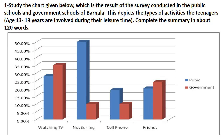Now here is an example. Study the chart given below, which is the result of a survey conducted in public schools and government schools of Brunala. It depicts the type of activities teenagers (aged 13 to 19 years) are involved in during their leisure time. Complete the summary in about 120 words. This is a double bar chart. On the x-axis the activities are given: watching TV, net surfing, cell phone, and friends. The blue bar shows teenagers of public schools and the red bar shows teenagers of government schools, with percentage on the y-axis.